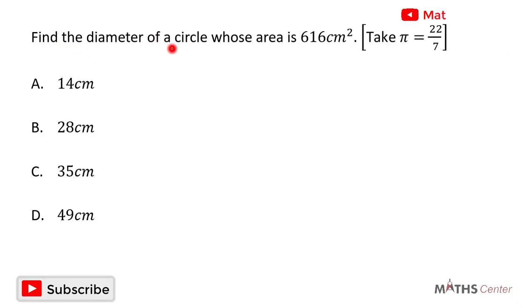Find the diameter of a circle whose area is 616 cm squared. Take pi to be 22 divided by 7. This is a multiple choice question, so solve the question and then pick the correct option.